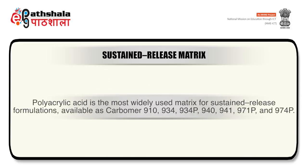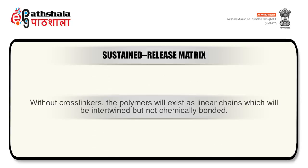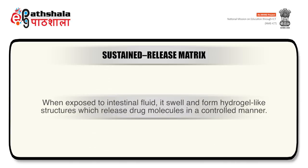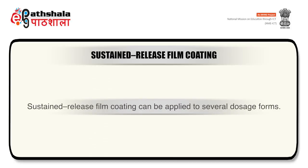Polyacrylic acid is the most widely used matrix for sustained release formulations, available as carbomer 910, 934, 934P, 940, 941, 971P, and 974P. Polymers of acrylic acid cross-linked with polyalkenyl ethers or divinyl glycol are called carbopol polymers. Without cross-linkers the polymers exist as linear chains which are intertwined but not chemically bonded. Carbopol polymers contain 56% to 68% of carboxylic acid. When exposed to intestinal fluid they swell and form hydrogel-like structures which release drug molecules in a controlled manner.